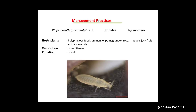Number three is Thrips. The scientific name of this pest is Rhipiphorothrips cruentatus. It belongs to family Thripidae and order Thysanoptera. This pest is polyphagous and feeds on mango, pomegranate, rose, guava, jackfruit, and cashew. Oviposition takes place in the leaf tissue and pupation takes place inside the soil.